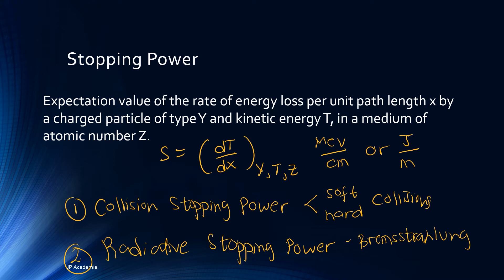Second, we have the radiative stopping power, which involves the radiative interactions. Generally, this is for those incurred in nuclear encounters that result in Bremsstrahlung production. This increases with increasing particle energy.